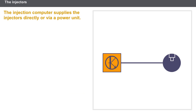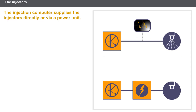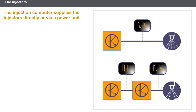On most systems, the injectors are supplied via the injection computer. However, there are systems where the injector supply is provided via a power unit. The injection computer sends a signal relating to the required injection phases, the power unit supplies the injectors, and a diagnostic line allows the power unit to confirm the opening of the injectors to the computer.